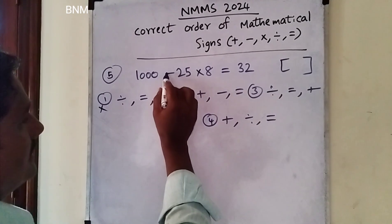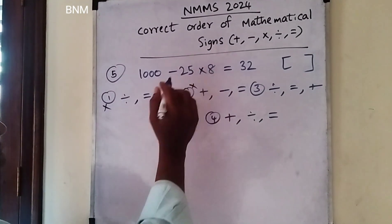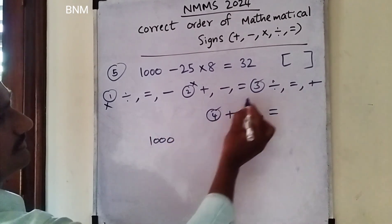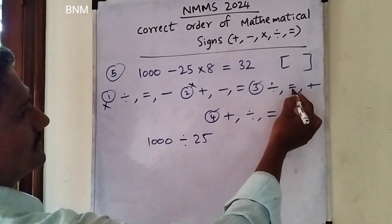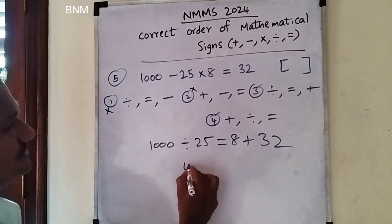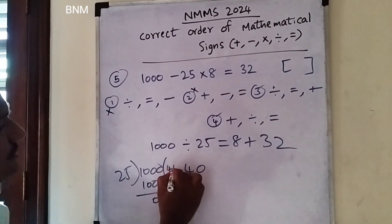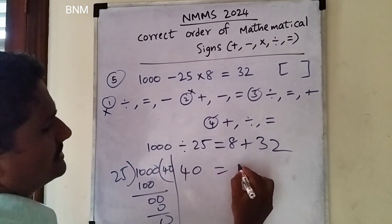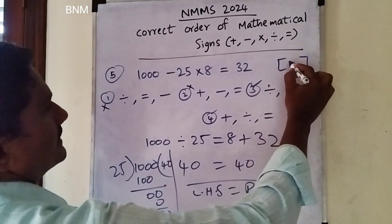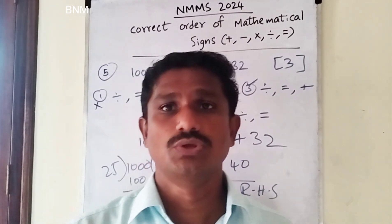1025 minus 8 equals 32 — check that. 1025 minus 8 is 1017, equal to 32 — check next. Thousand, division first, then into 3, equal to, then plus 32. Division gives 40. So both sides equal 40. The third one is the right answer. I will finish the practice bits and clarify the correct answer in your comment box.